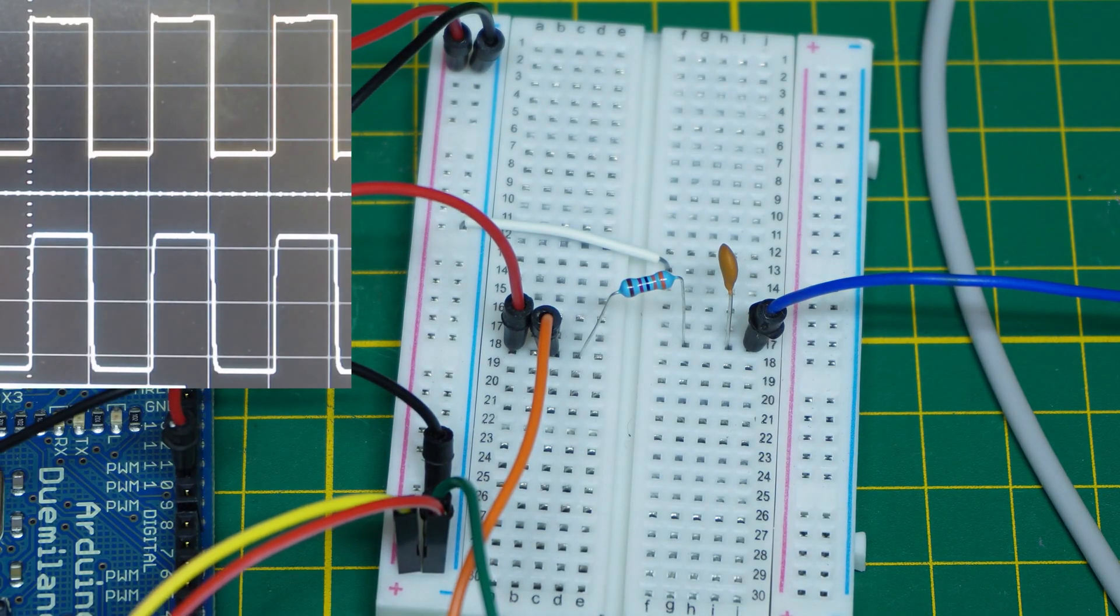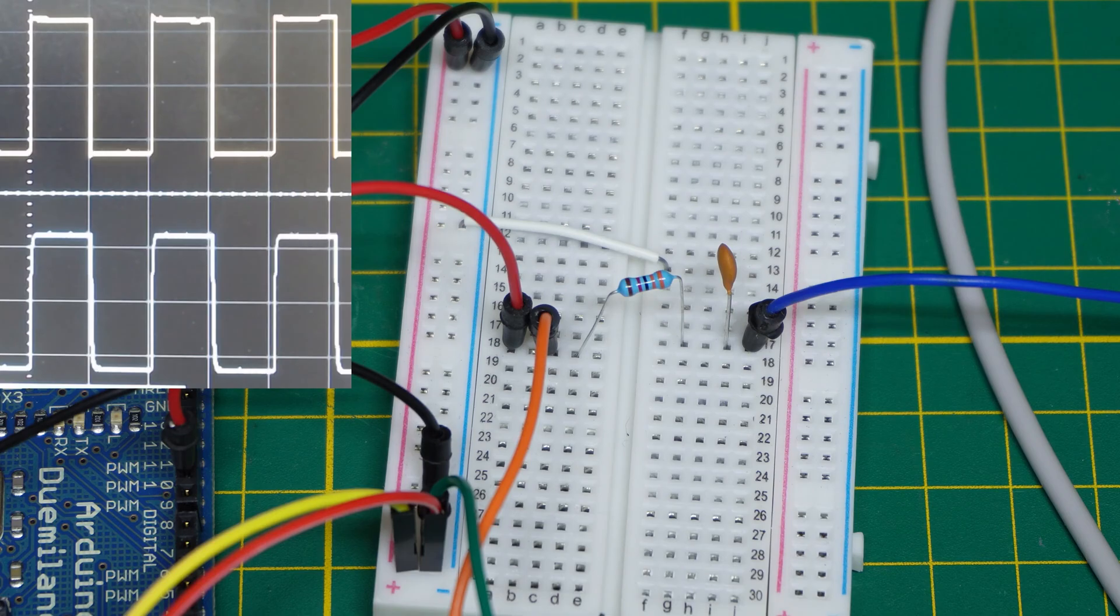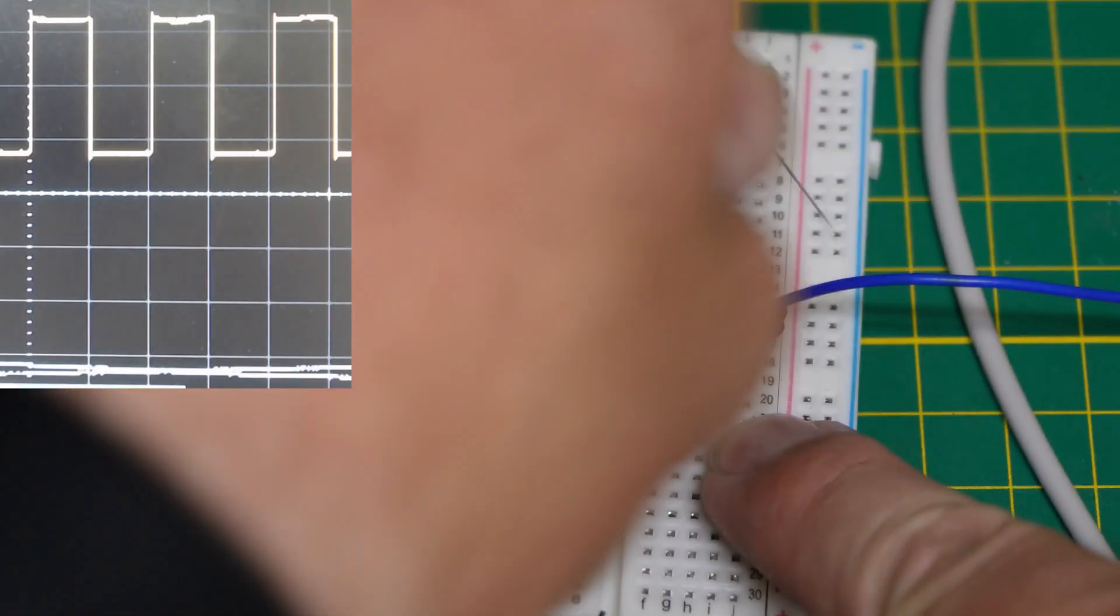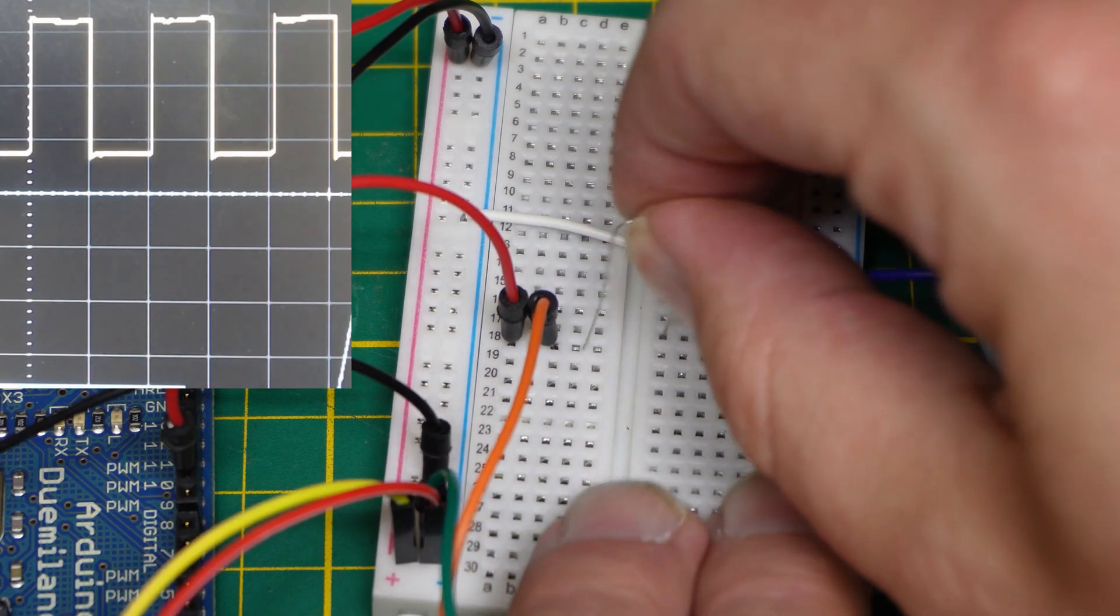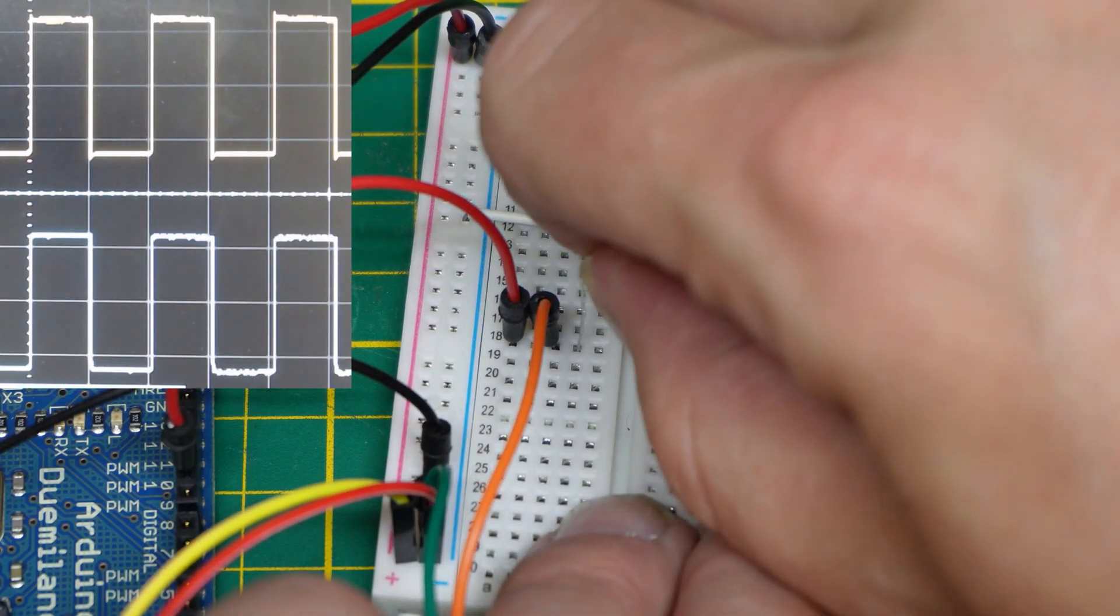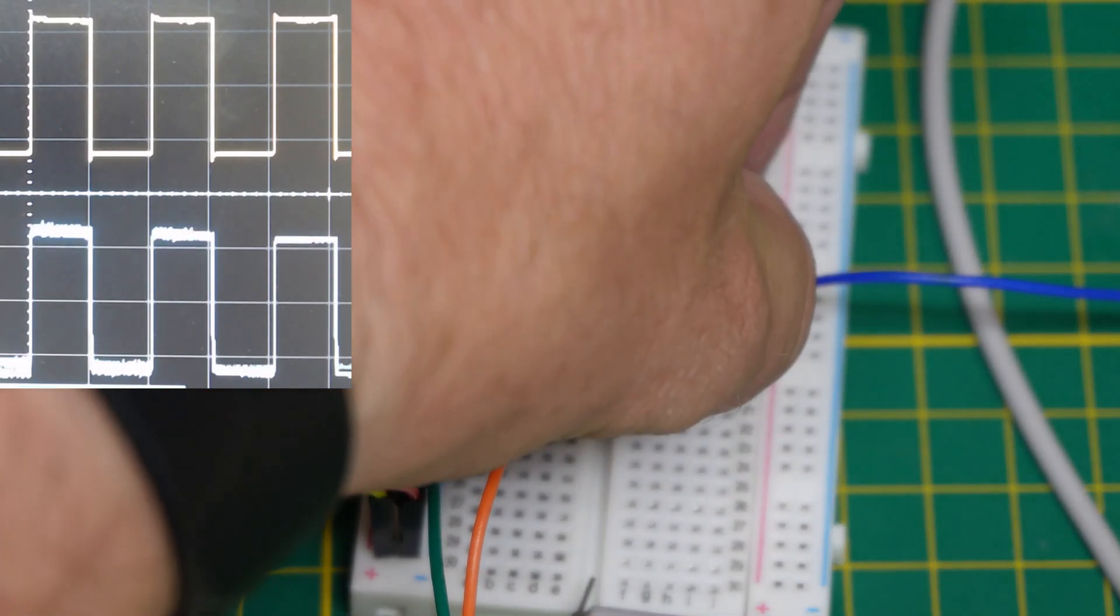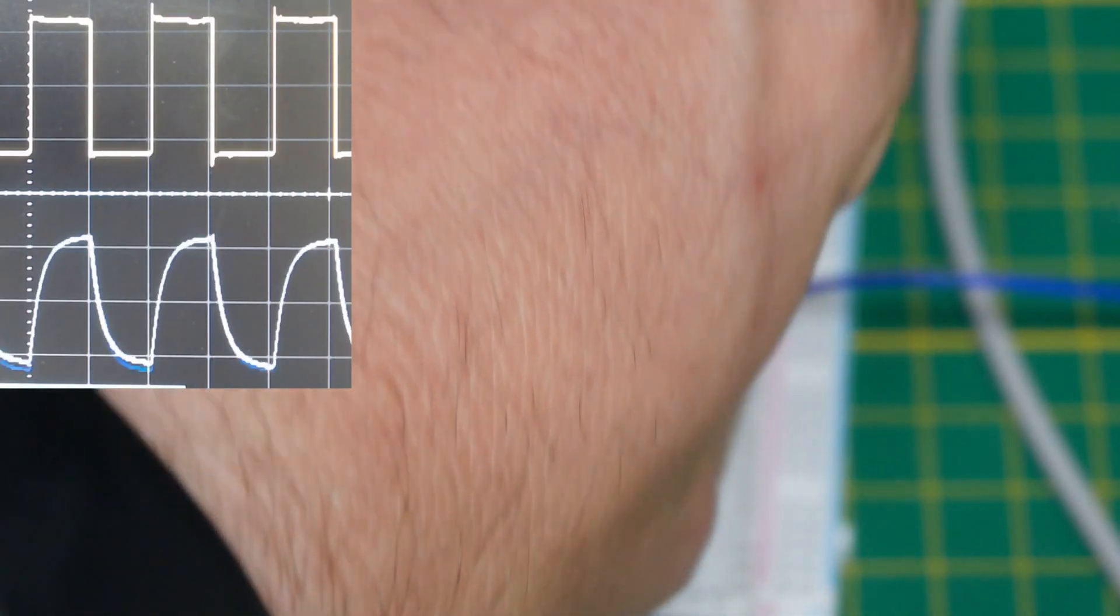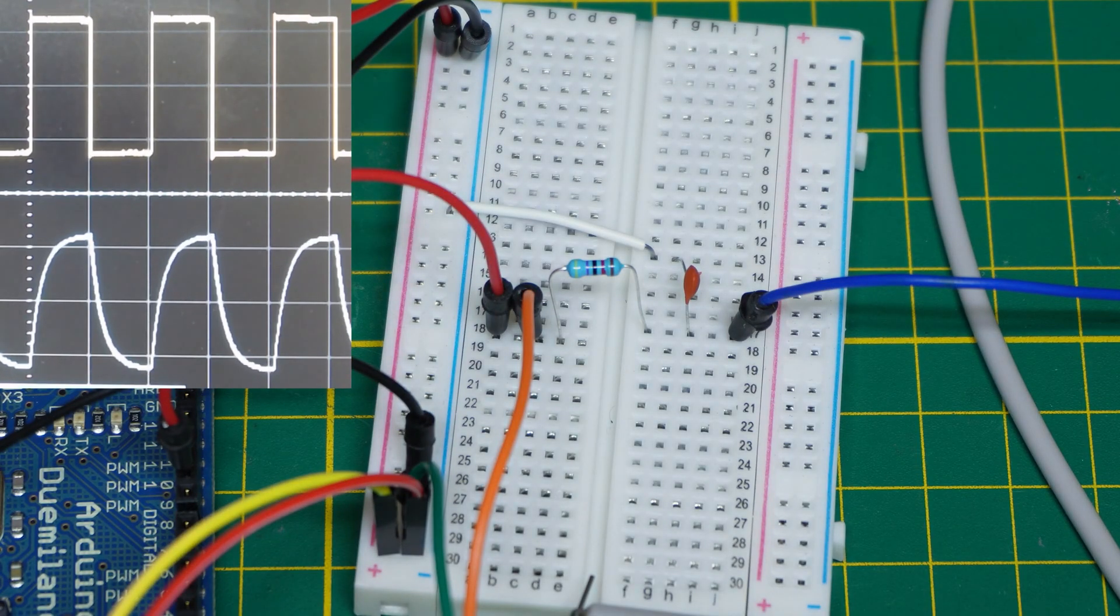The second signal looks a lot like the first, a bit smoother perhaps. Now let's make the resistor 10 times as big, 47 kOhms, and do the same with the capacitor, 4.7 microfarad. This makes about 100 times slower signal.